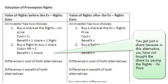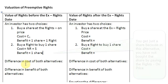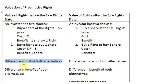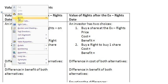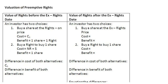Now let us see how these two alternatives differ in terms of costs and benefits. The difference in cost of both alternatives is C_O minus (NR plus S). Since these two alternatives differ in terms of costs, their benefits must also be different, so let us find out the difference in benefits of these alternatives.